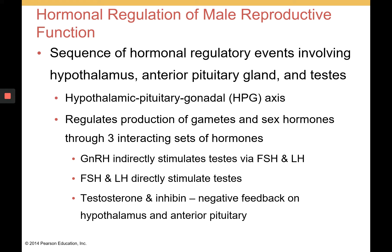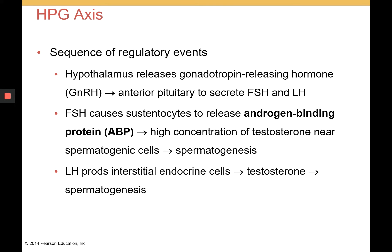Testosterone and inhibin are produced by the testes and exert negative feedback on the hypothalamus and anterior pituitary. The regulatory sequence begins in the hypothalamus, which releases gonadotropin-releasing hormone. This travels to the anterior pituitary, causing release of FSH and LH, which then travel to the testes. FSH causes sustentocytes to release androgen-binding protein (ABP), which sequesters a high concentration of testosterone near the spermatogenic cells, stimulating spermatogenesis. LH prompts the interstitial endocrine cells, or Leydig cells, to secrete testosterone, which is then sequestered by ABP to further stimulate spermatogenesis.